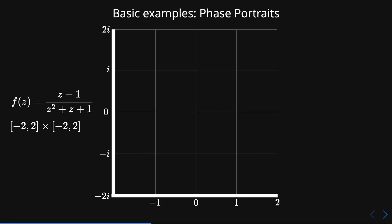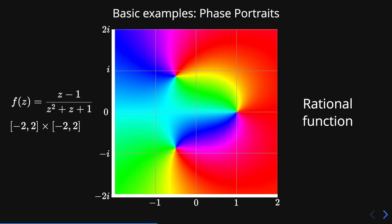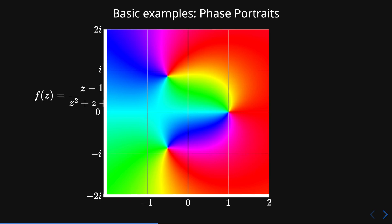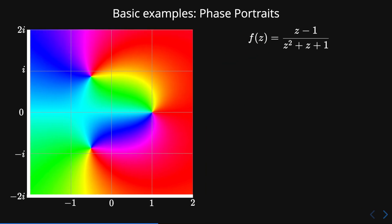Now let's plot a slightly more complicated function. Consider the function z minus 1 over z square plus z plus 1. This is a rational function with the following phase portrait. There are a few mathematical properties we can explore with this phase portrait.